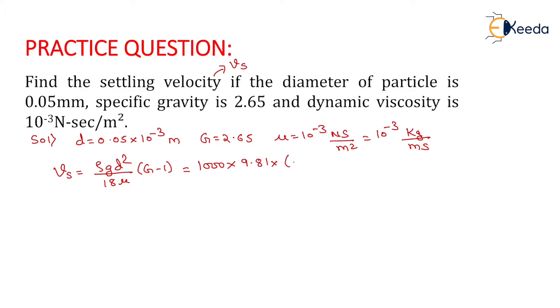d is the particle diameter = (0.05 × 10^-3)². The specific gravity term is (2.65 - 1). The denominator is 18μ = 18 × 10^-3 kg per meter-second.